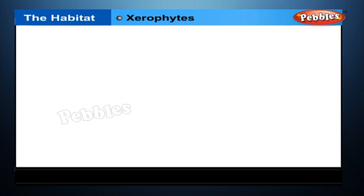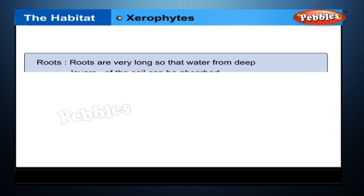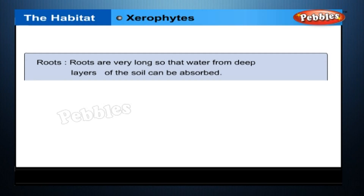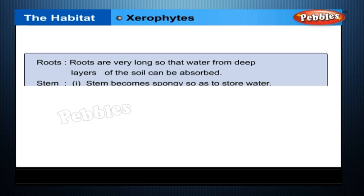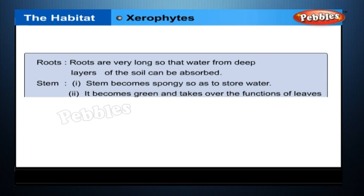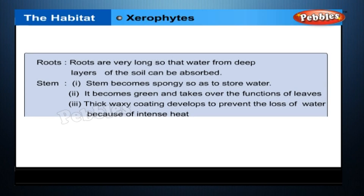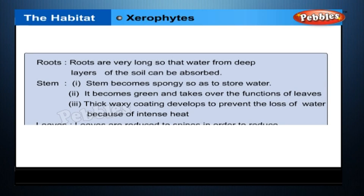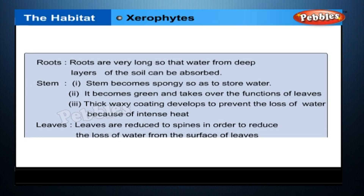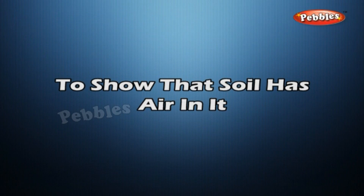Xerophytes — Roots: Roots are very long so that water from deep layers of the soil can be absorbed. Stem: The stem becomes spongy to store water, turns green and takes over the functions of leaves. A thick waxy coating develops to prevent the loss of water due to intense heat. Leaves: Leaves are reduced to spines in order to reduce the loss of water from the leaf surface.